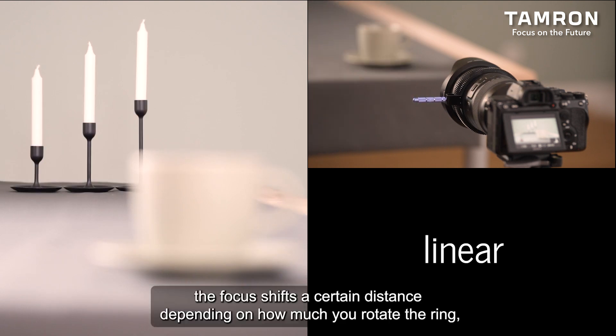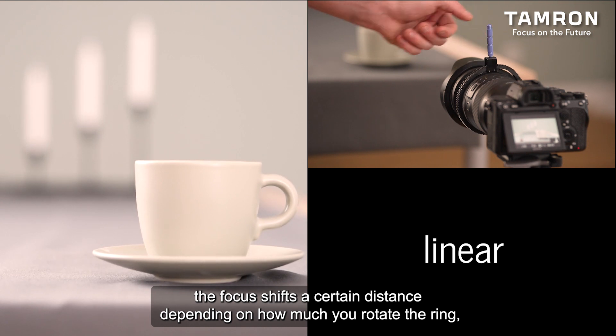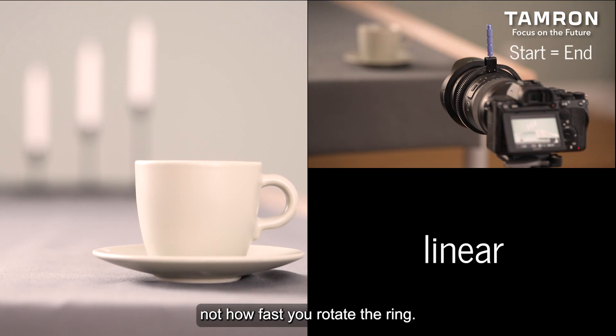When shifting the focus point from A to B by rotating the focus ring, the focus shifts a certain distance depending on how much you rotate the ring, not how fast you rotate the ring.